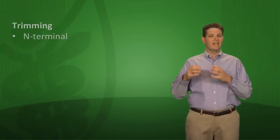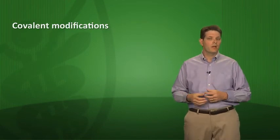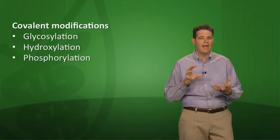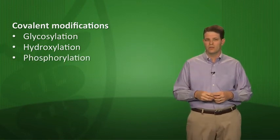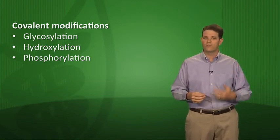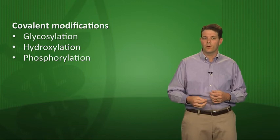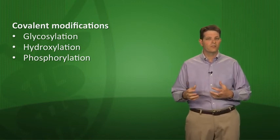To summarize: antibiotics affecting the 50S subunit are chloramphenicol, linezolid, macrolides, clindamycin, lincomycin, and the streptogramins. The 30S subunit is targeted by tetracyclines and aminoglycosides. Once the polypeptide is translated, important post-translational processing occurs: the N-terminal or C-terminal portion can be trimmed, and the polypeptide can be covalently modified by glycosylation, hydroxylation, or phosphorylation.